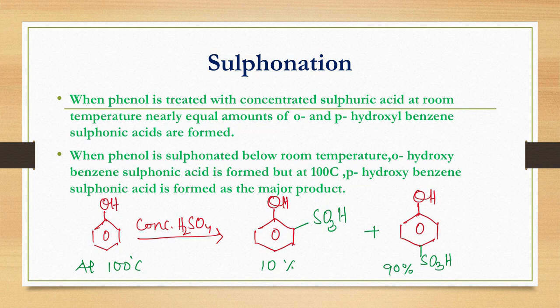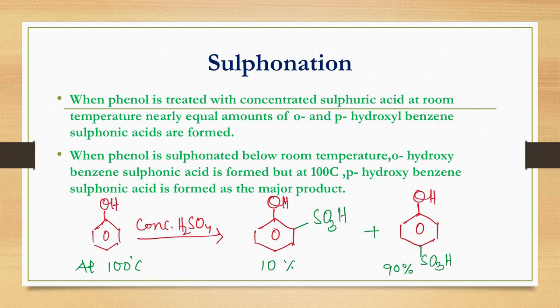Sulfonation: when phenol is treated with concentrated H₂SO₄ at room temperature, it gives approximately 50% orthohydroxybenzene sulfonic acid and 50% parahydroxybenzene sulfonic acid. Below room temperature, the ortho isomer is the major product; at 100°C, the para isomer is the major product. The electrophile in aromatic sulfonation is always neutral SO₃.